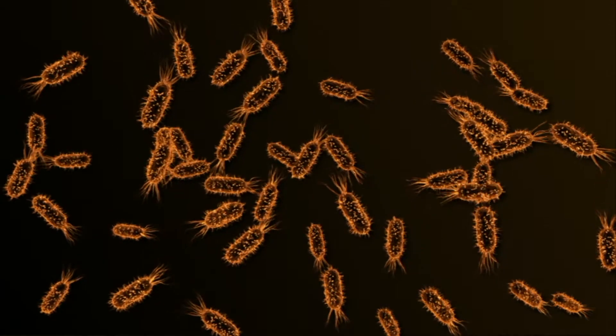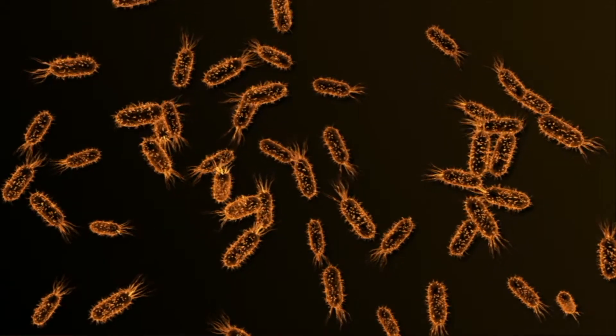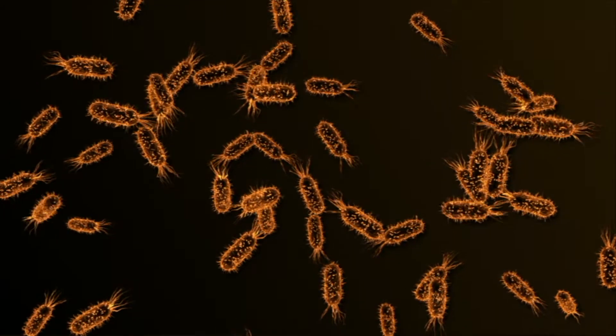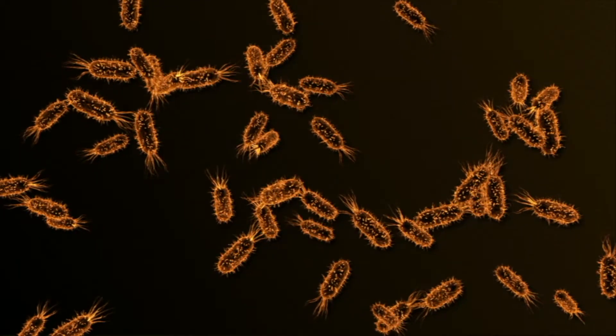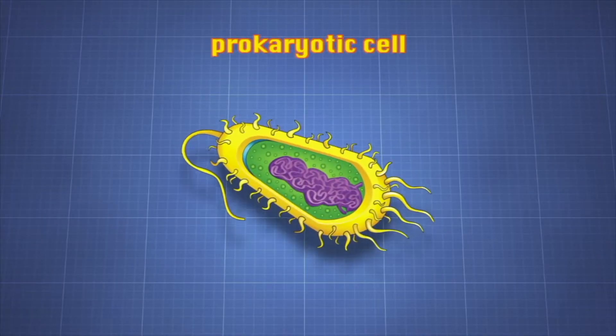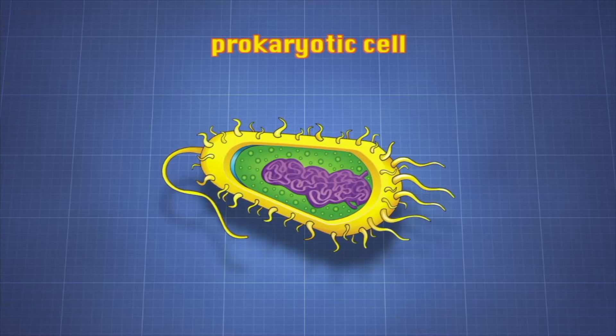Prokaryotes are able to multiply rapidly because of their small size. Their DNA takes a short time to replicate and with a high surface area to volume ratio, they can absorb nutrients quickly. Also, the relative simplicity of the cell's internal organization allows rapid duplication.